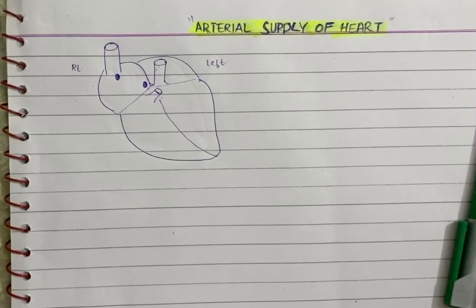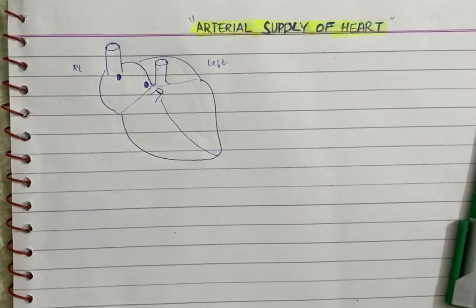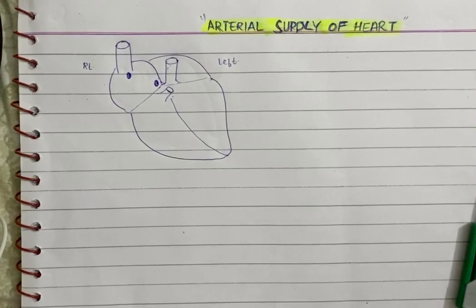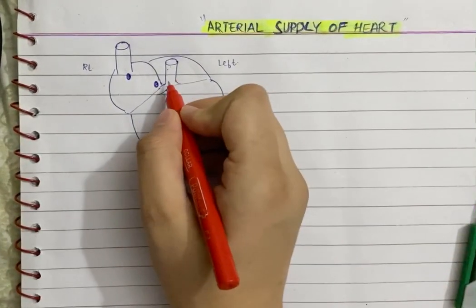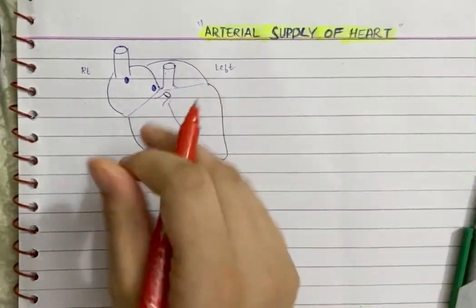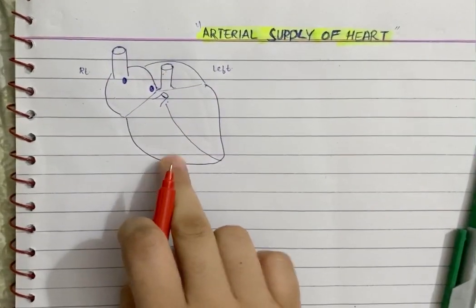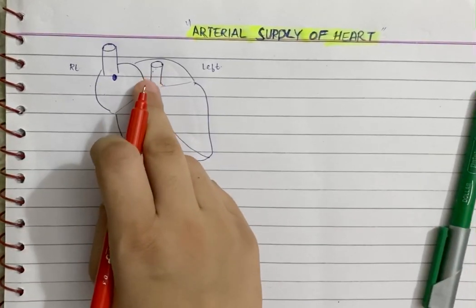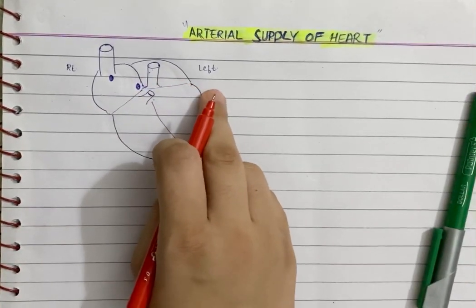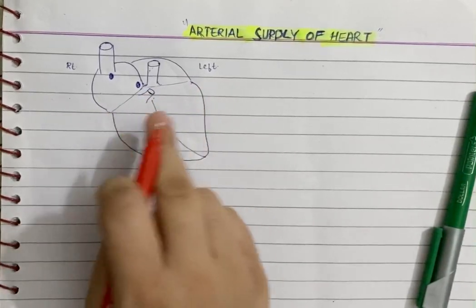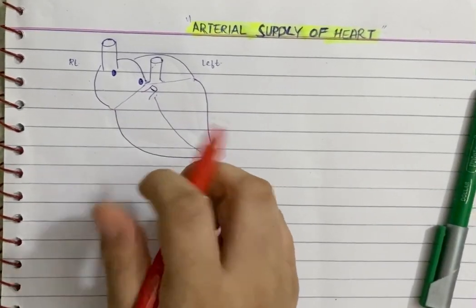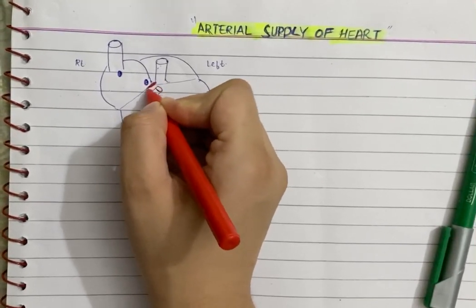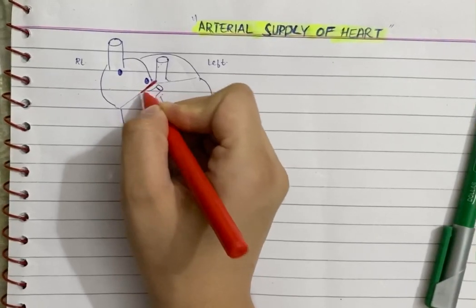All parts of our body are supplied by the aorta, so of course the heart will also be supplied by a branch that comes from the aorta. Our heart has two parts — the right side and the left side — so there are two branches: the right coronary artery and the left coronary artery, that supply the respective sides of the heart. This right coronary artery comes from the aorta as the first branch.